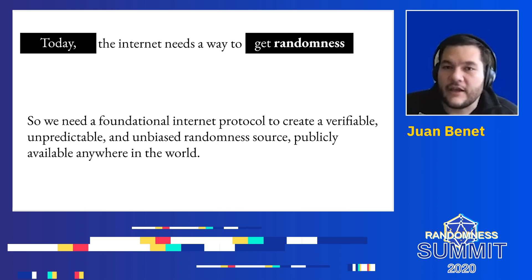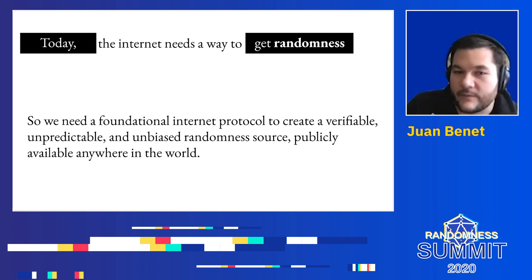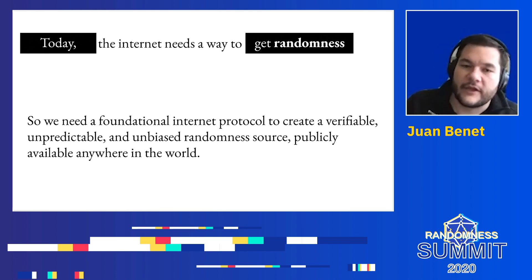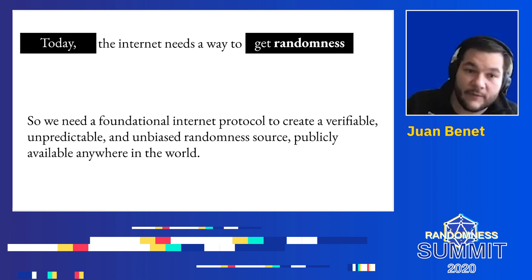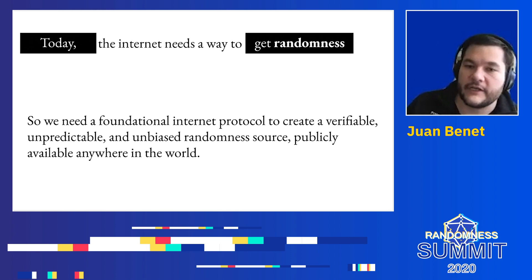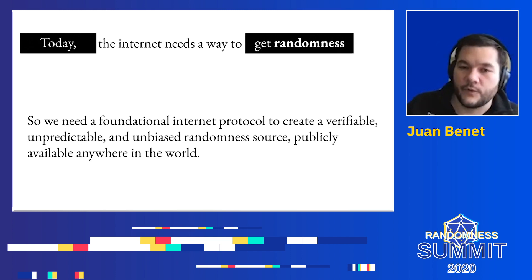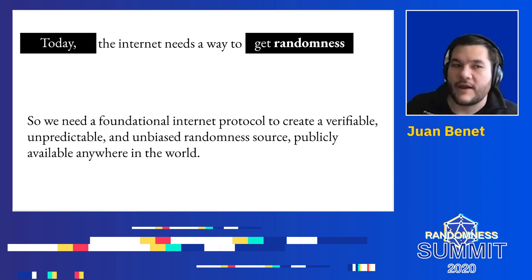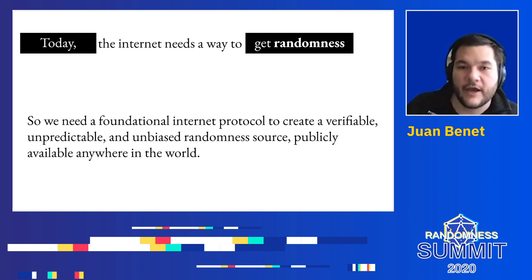Today, the Internet needs a way to get randomness — a very similar story. We need a foundational Internet protocol, like NTP, to create a verifiable, unpredictable, and unbiased randomness source that is publicly available anywhere in the world. It's a very similar problem to NTP, where you want a set of parties working together to produce randomness, and then you want to distribute that randomness as far and wide as possible and enable all parties in the network to access it.